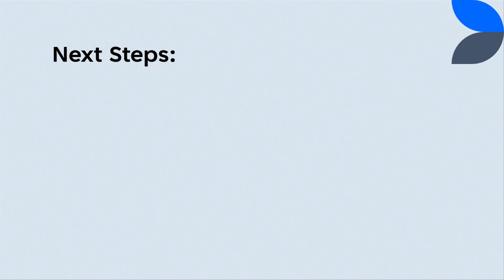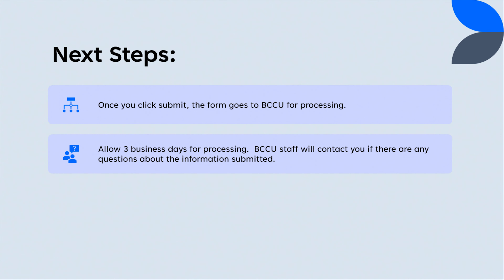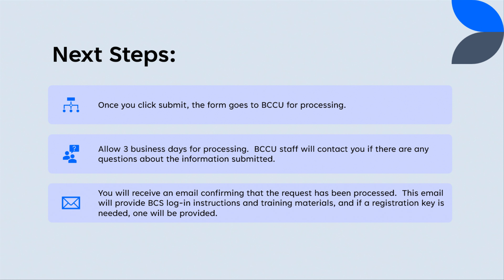Next Steps. Once you click submit, the form goes to BCCU for processing. Allow three business days for processing. BCCU staff will contact you if there are any questions about the information submitted. You will receive an email confirming that the request has been processed. This email will provide BCS login instructions and training materials. And if a registration key is needed, one will be provided.